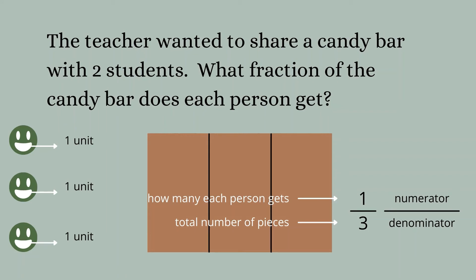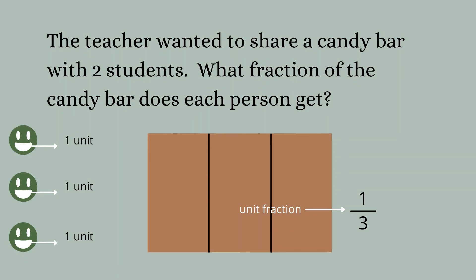I noticed something special about the answer we found. The fraction has a number one in the numerator, and that's because each of the people gets one unit of the candy bar — one tiny piece, one third of the candy bar goes to each person. Because there's a number one in the numerator, we like to call this fraction a unit fraction. You get one unit, it's called a unit fraction. If the denominator was different — say it was four and the fraction was one fourth — as long as that number one is in the numerator, it would still be a unit fraction.